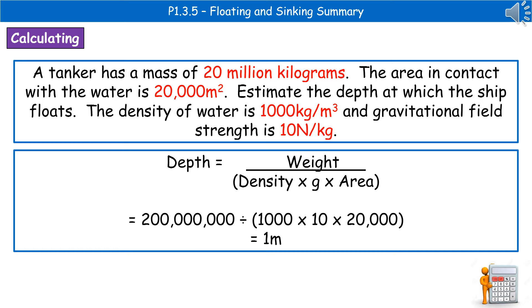We can then substitute in our values. The weight we worked out originally is 200 million, and then we divide that by the density, which is 1,000, times by gravitational field strength, which is 10, times by the area, 20,000 meters. That then gives us our total answer of 1 meter.